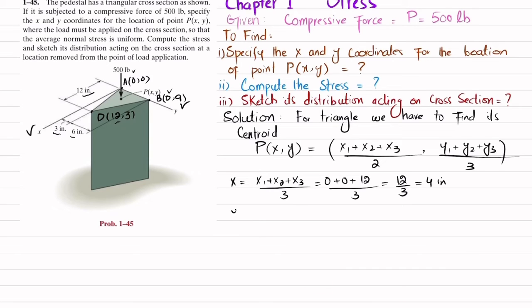So the x coordinate is 4. Now the y coordinate will be equal to (y1 + y2 + y3) divided by 3. So y1 is 0, y2 is 9, and y3 is 3.